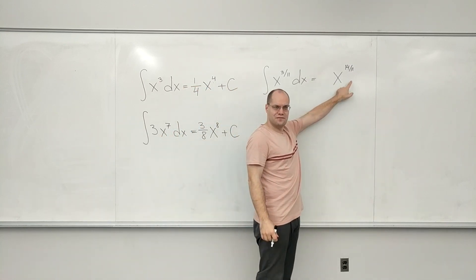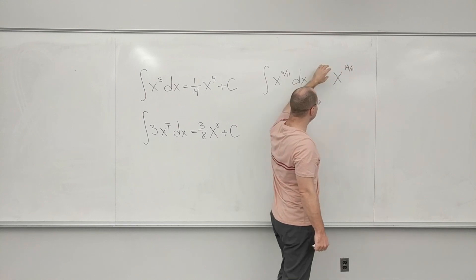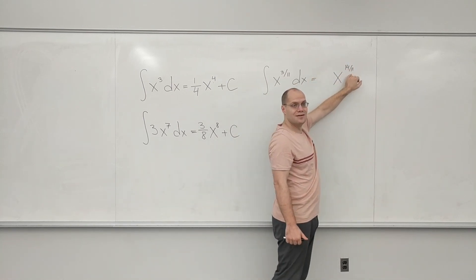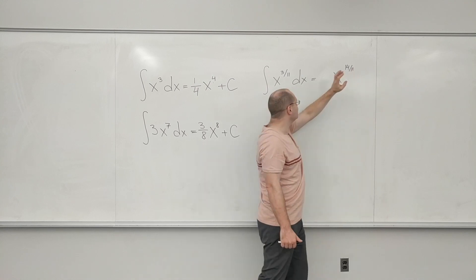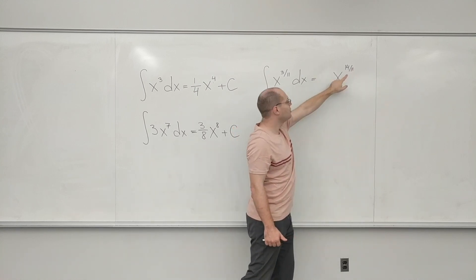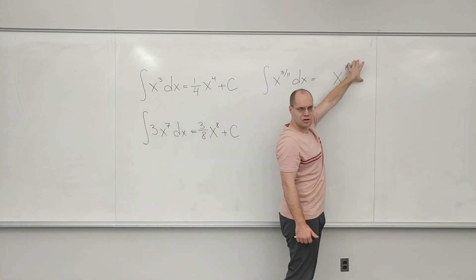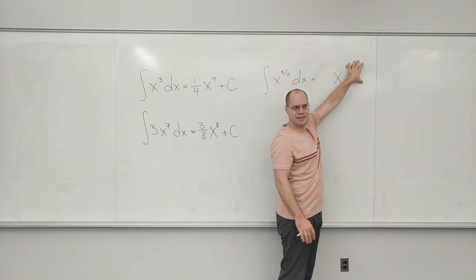I will now take the derivative of this in my head, and I know that 14/11th will come down. I don't even need to calculate because the way I came up with this power was by adding one to this power. So I know this part will work out. I don't need to worry about that part. I just need to adjust the coefficient.